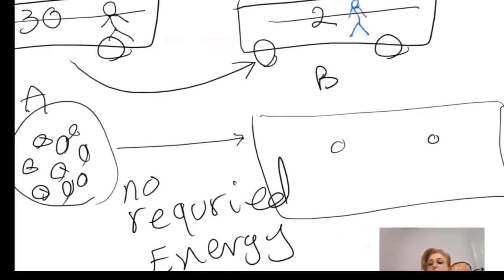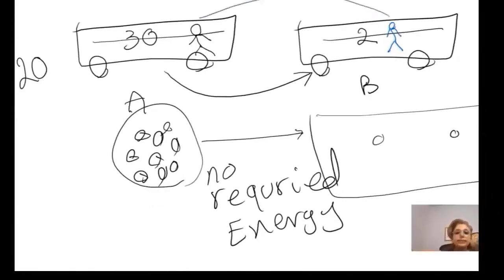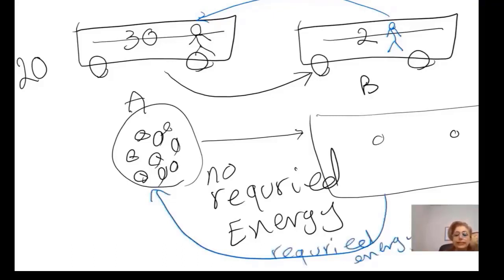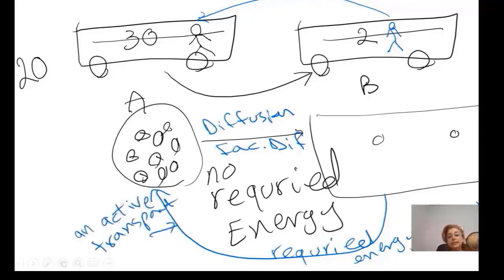Now imagine you are in Bus B and I ask you to move and find a place in Bus A — would you like to go? Can you easily find a space in Bus A? No, because the bus is already overloaded. If you want to find a space there, you need to spend energy. So when molecules go from low concentration to high concentration, it requires energy — ATP. This is active transport. Whenever you study diffusion, facilitated diffusion, or active transport, remember this example.